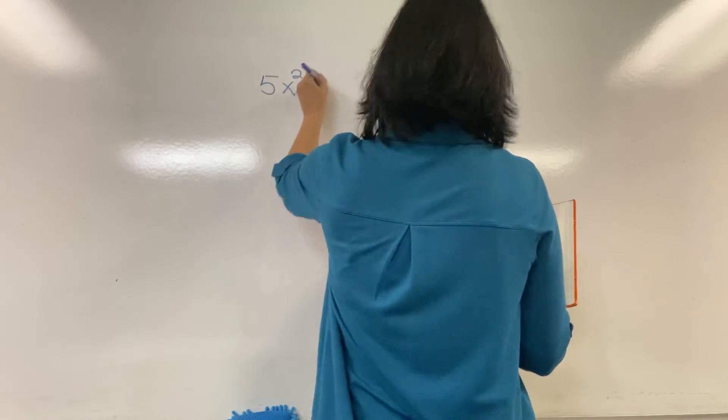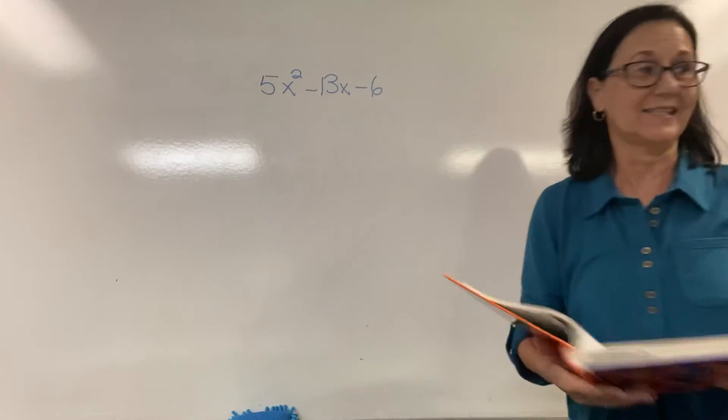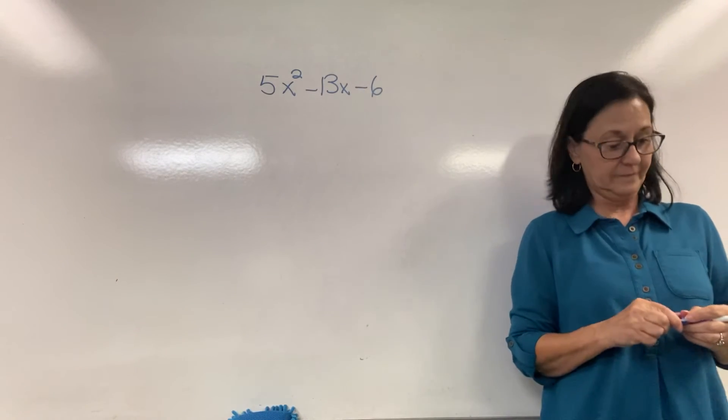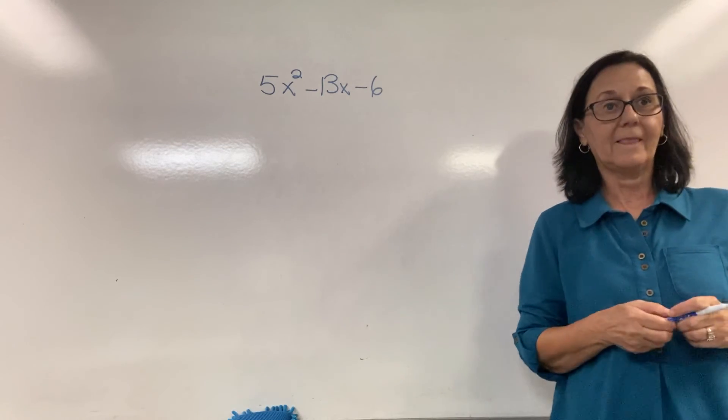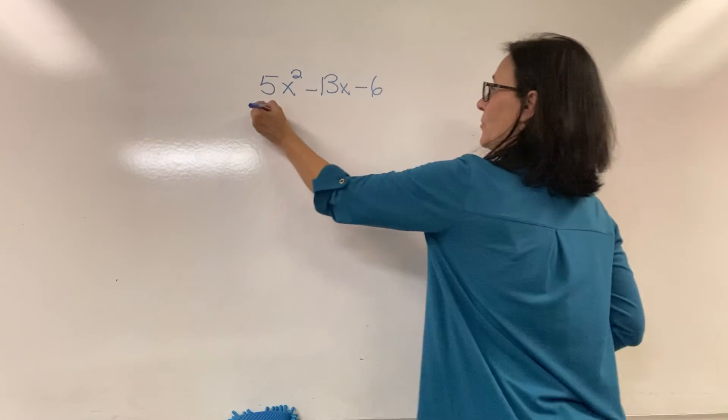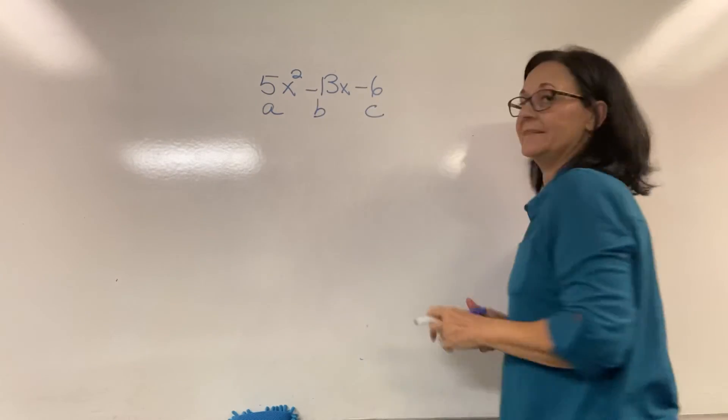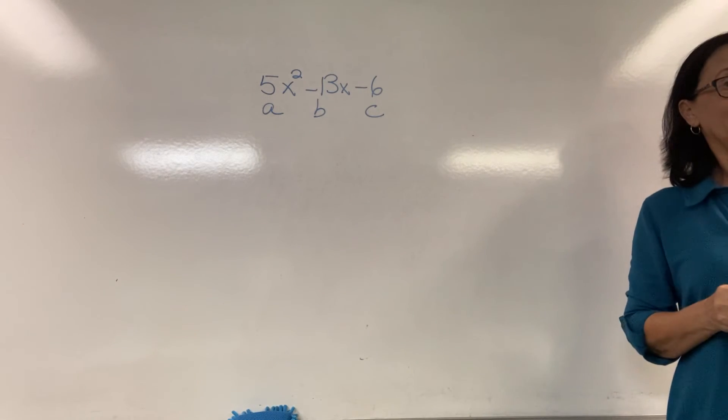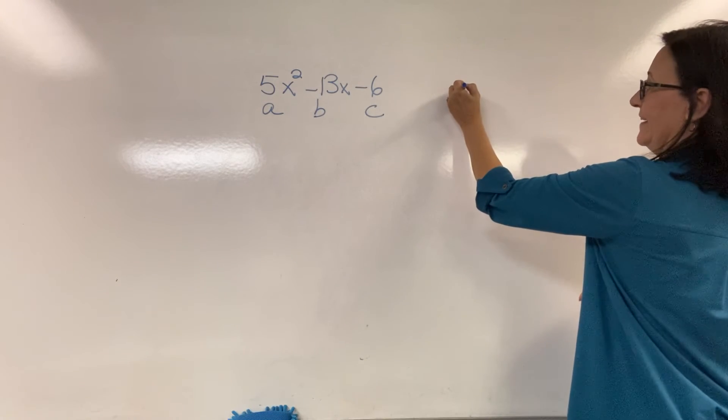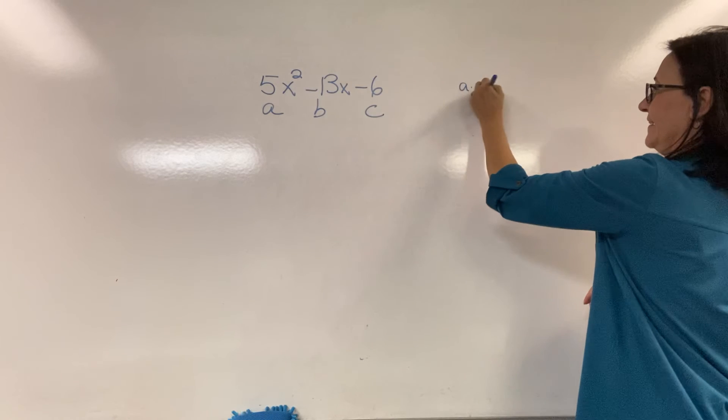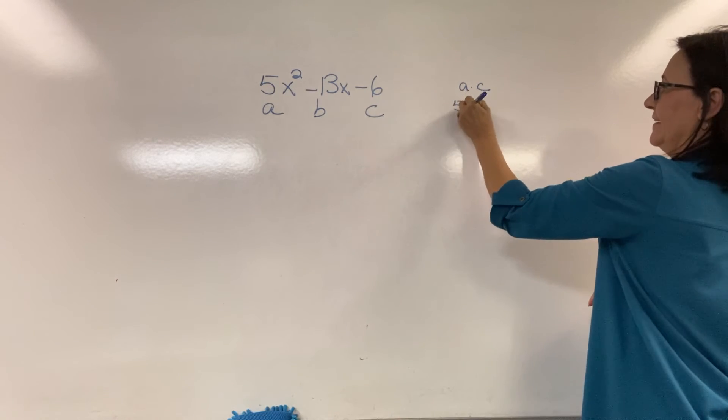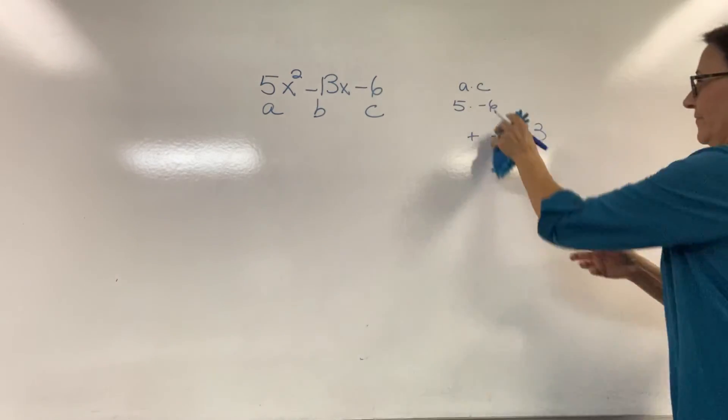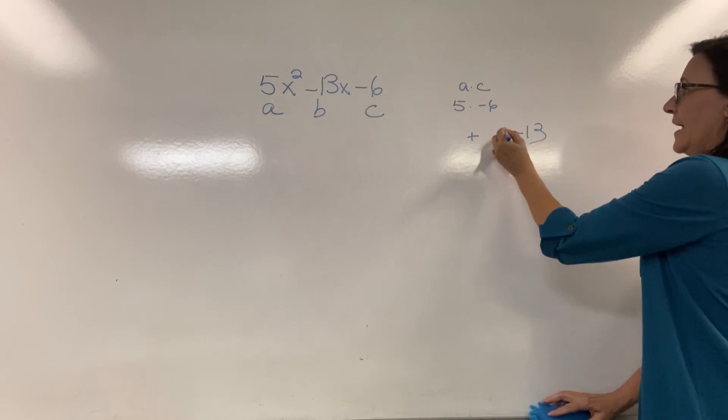5x squared minus 13x minus 6. First thing. It's in proper order. What we must do next is label a, b, and c. A is what? 5. So we must multiply 5 times negative 6 such that when added, they equal negative 13. That's correct.